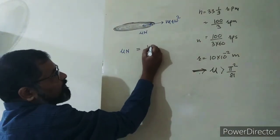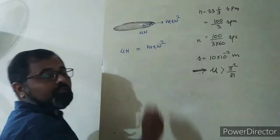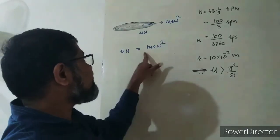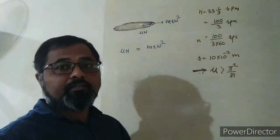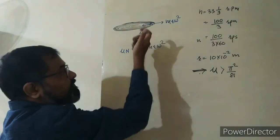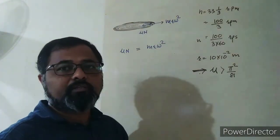So μN should equal the centrifugal force acting on it to balance it. The mosquito won't go outward. But if you increase the frequency (number of revolutions per unit time)...